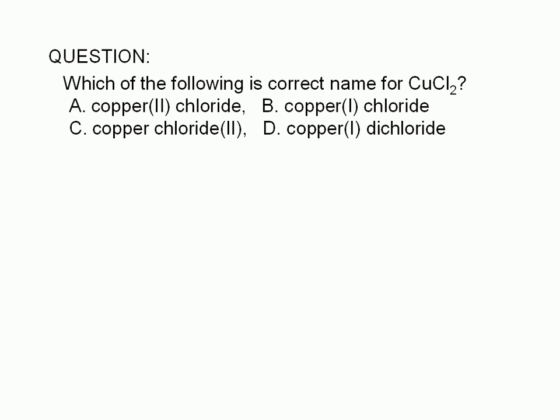Which of the following is the correct name for CuCl₂? A. Copper 2 Chloride. B. Copper 1 Chloride. C. Copper Chloride 2. Or D. Copper 1 Dichloride.